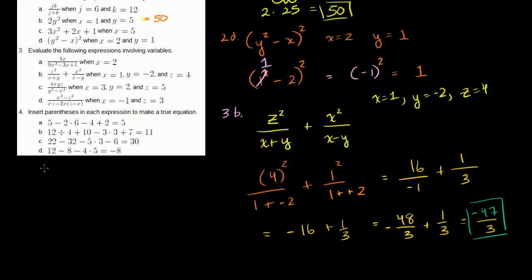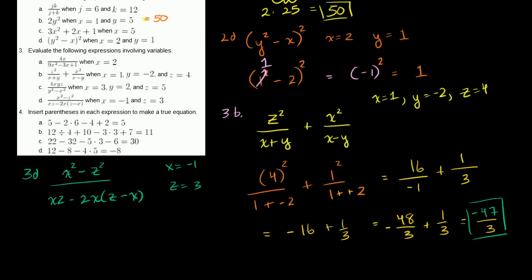Problem 3d: (x² minus z²) over (xz minus 2x times (z minus x)), where x equals negative 1 and z equals 3. Substituting: (negative 1 squared minus 3 squared) over (negative 1 times 3 minus 2 times negative 1 times (3 minus negative 1)).